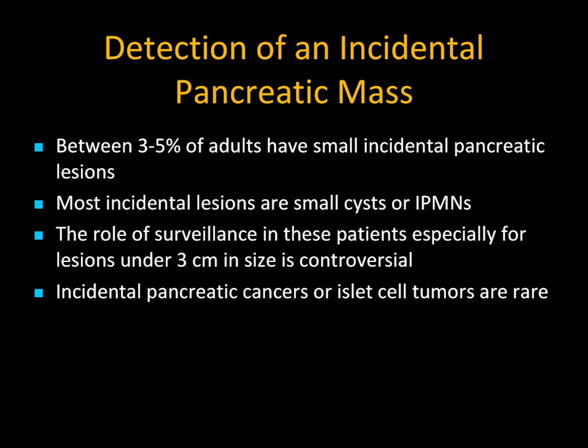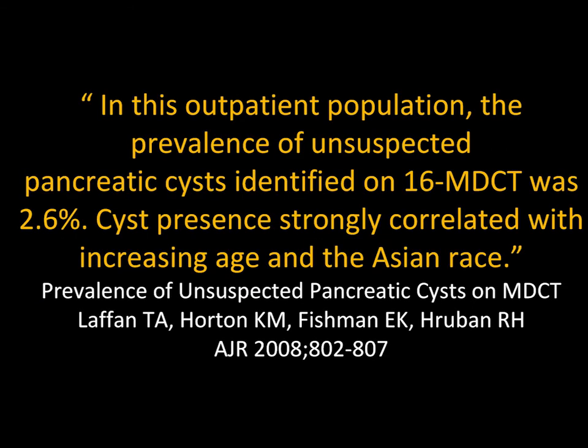The third topic is incidental pancreatic lesions. Up to 5% of adults have incidental pancreatic lesions — most are small cysts or IPMNs. The question is how to follow these lesions, not counting patients with a family history of pancreatic cancer or BRCA mutations. At 16-slice CT we found just under 3%, but people have noted it's higher. The better the scan, the more cysts you see. MR data can approach 20%.